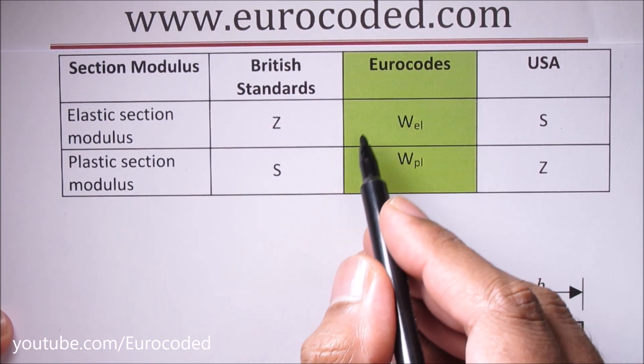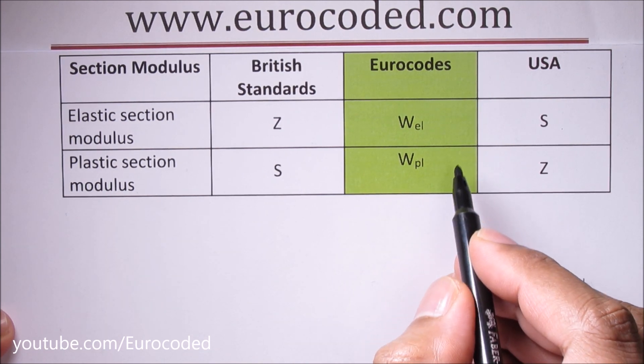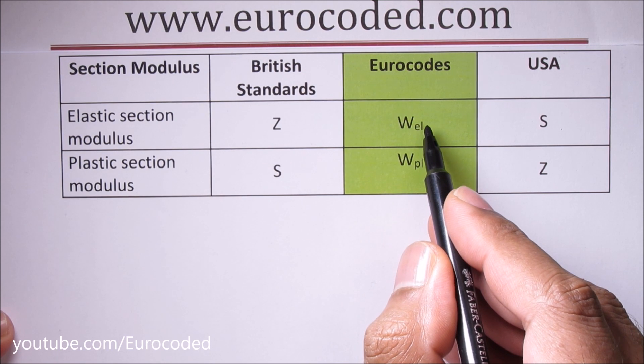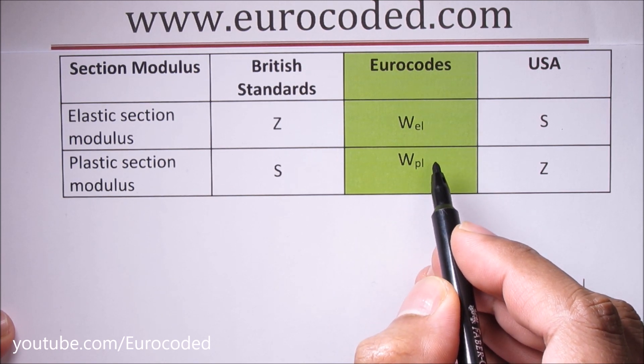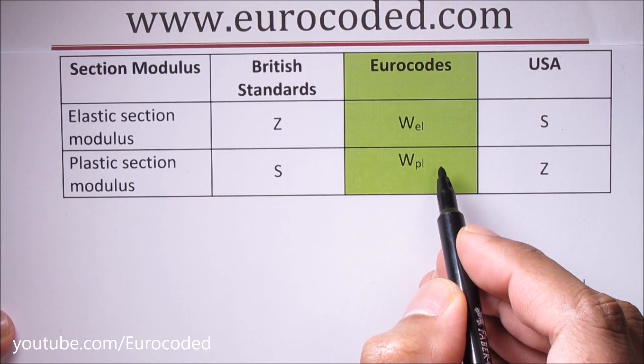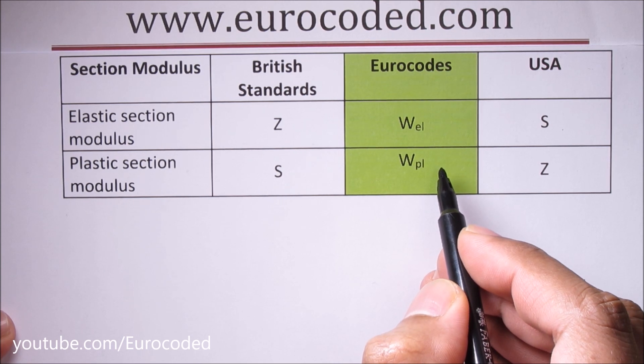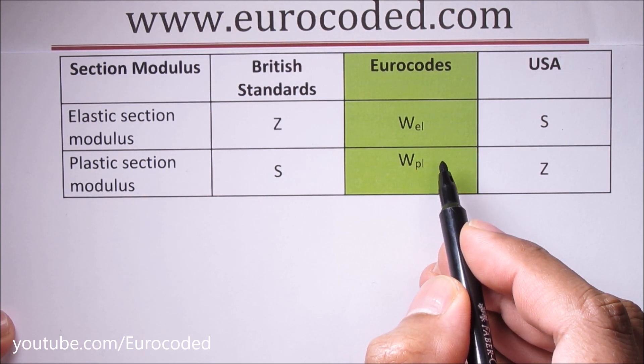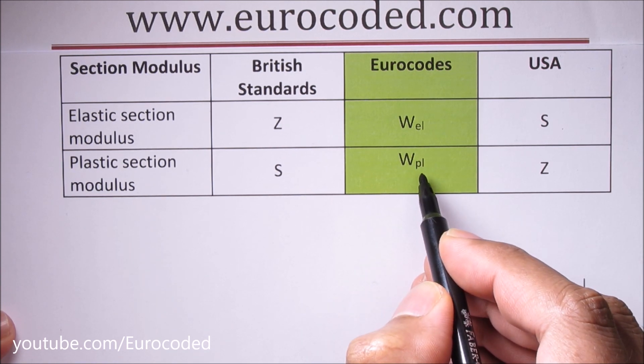Eurocodes have done something clever about this. Eurocodes have introduced a more clear notation where W is used for both plastic and elastic section moduli, but distinguishing between them by using subscripts EL and PL.